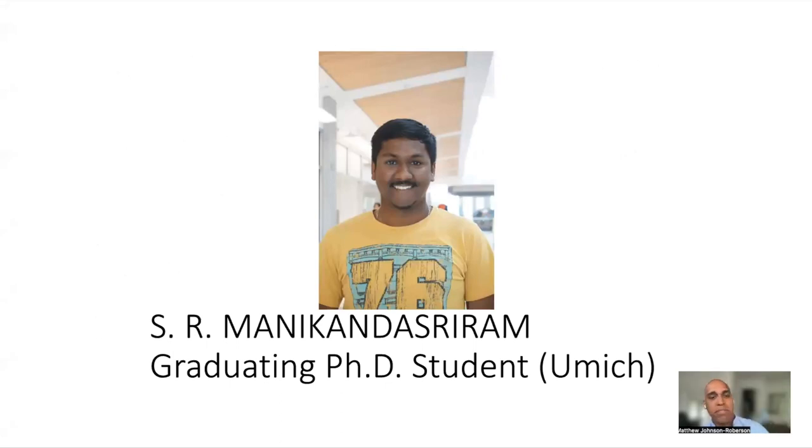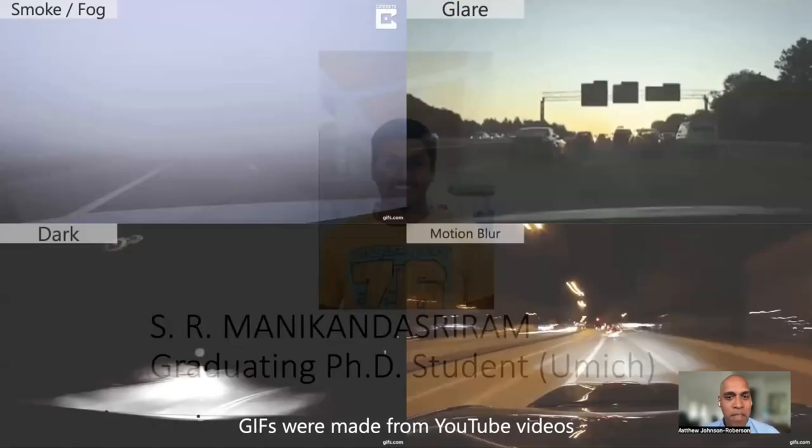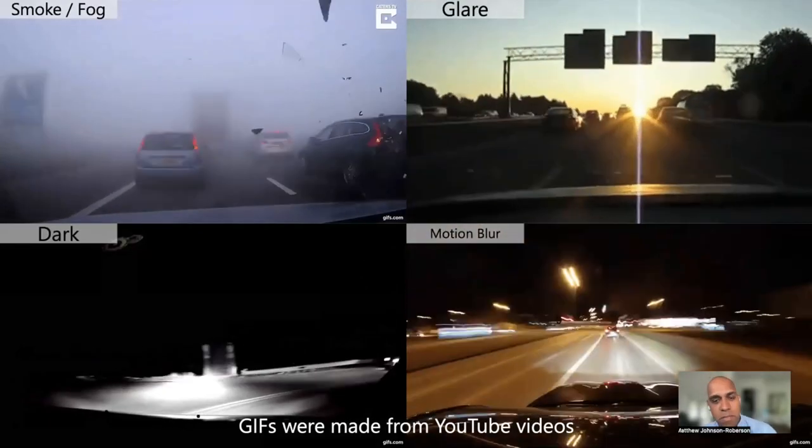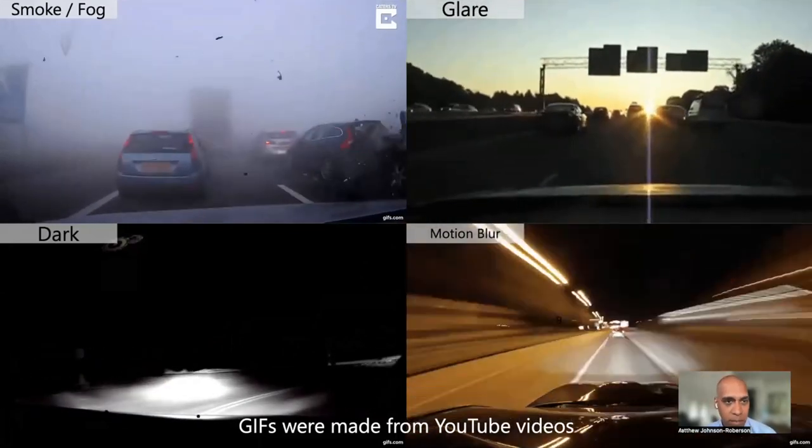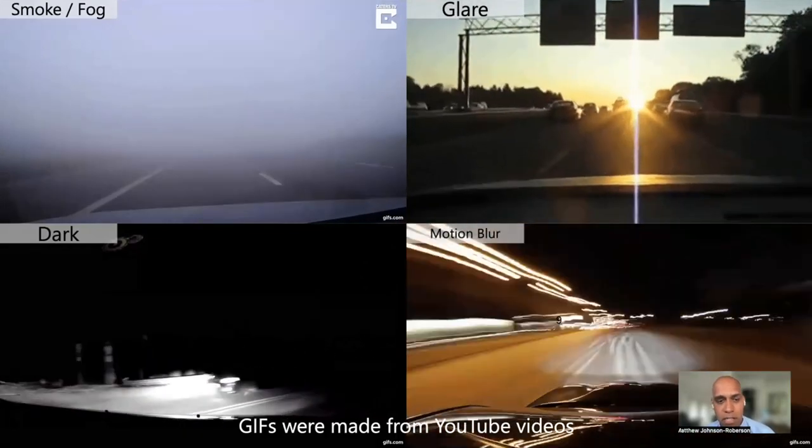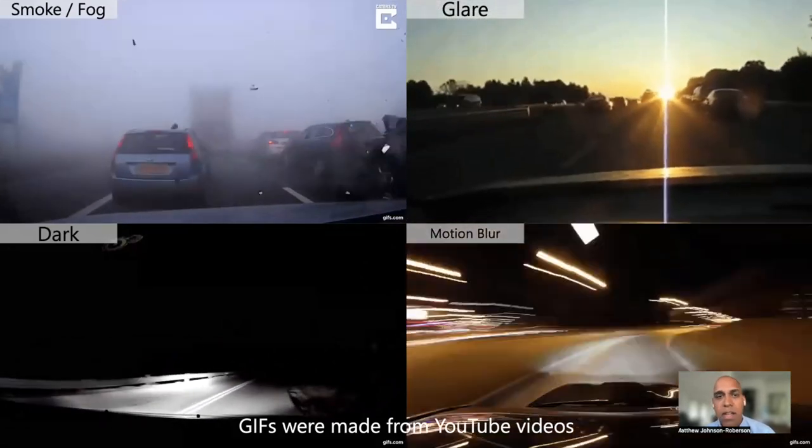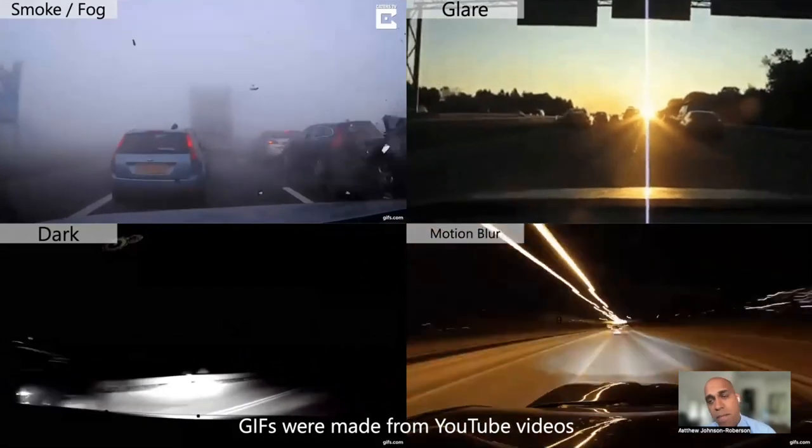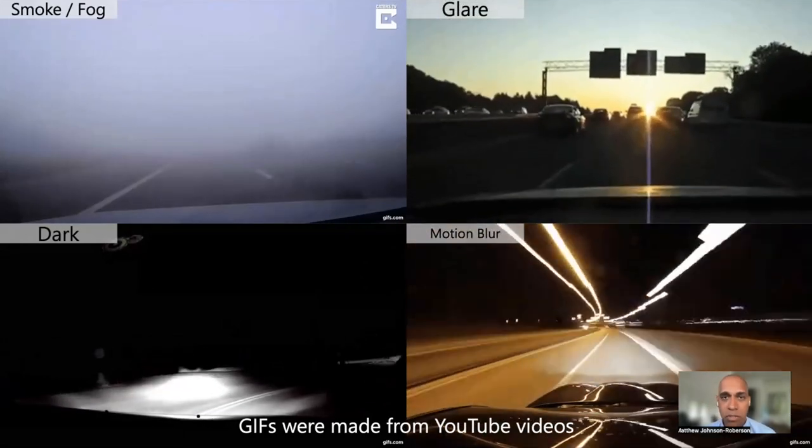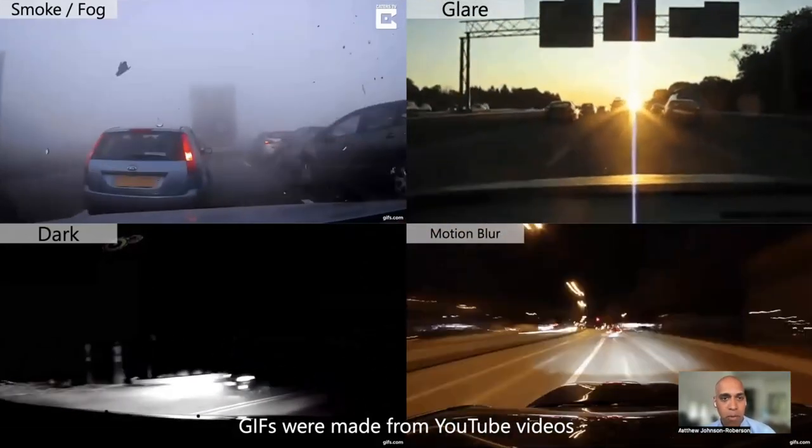So this is work, first work I'm going to present you is from student Ming-Yuan Yu in my group, who just graduated, and he's going to be moving on to a postdoc. So that's exciting for him. But one of the things he's really been focused on is thinking about all the challenges in perception. Everything from smoke and fog, to glare, to darkness, to motion blur. And those are really some of the challenges that we have to address when we think about the long tail in autonomous driving. So I think it's an important aspect of that.